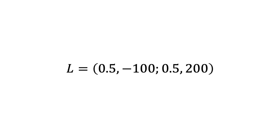For example, suppose you are offered a gamble with a 50% probability of winning $200 and a 50% probability of losing $100. We can write this as L equals 0.5, minus 100; 0.5, 200.